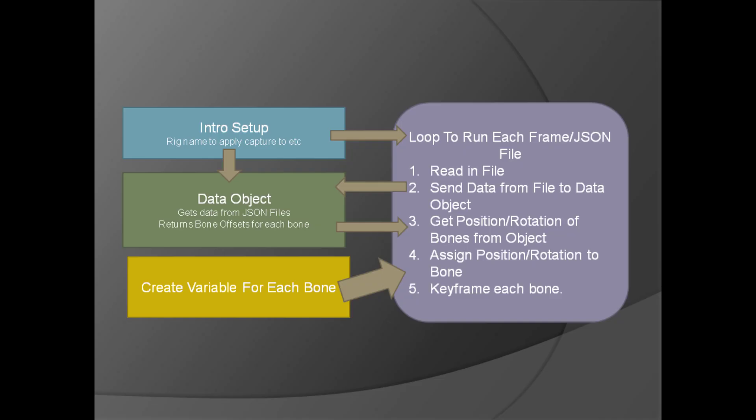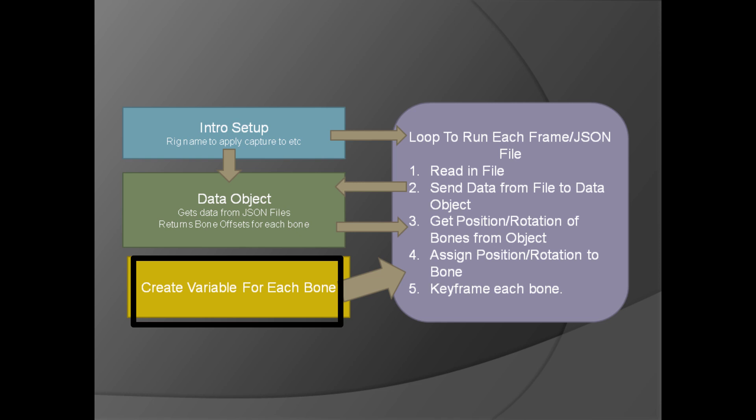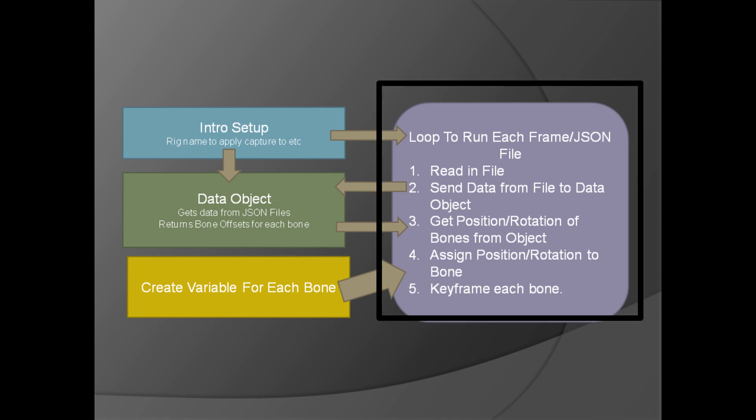This is an overview of the script. There are four main sections: the intro, the data object, a section where you create a variable for each bone, and then a loop at the bottom that loops through once for every frame.